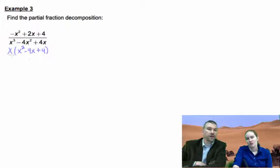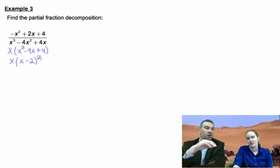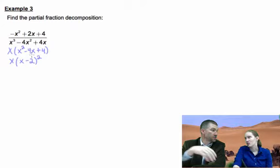That's going to factor. It factors into x minus two times x minus two, which is really x minus two squared. But for partial fraction decomposition, it might help if you just went ahead and write it as x minus two times x minus two.